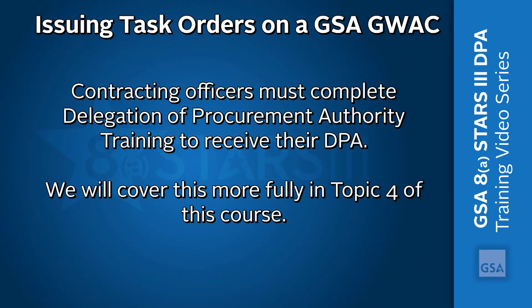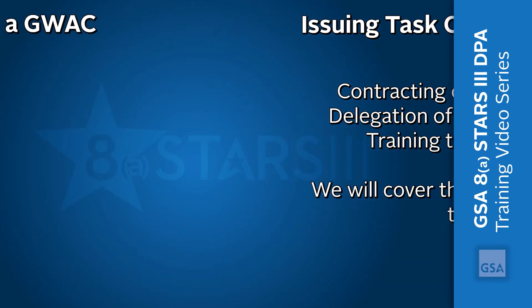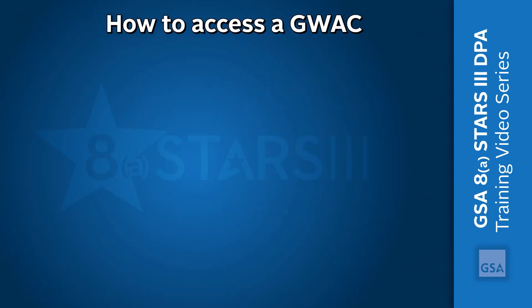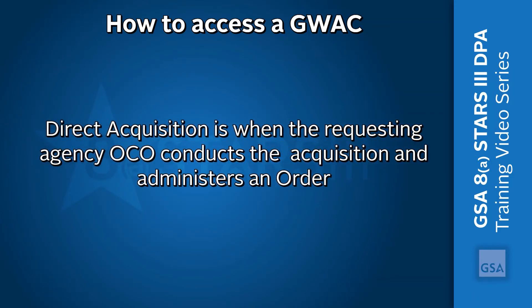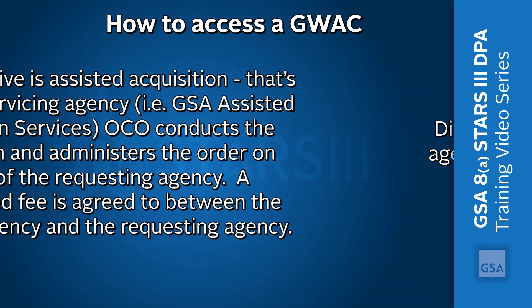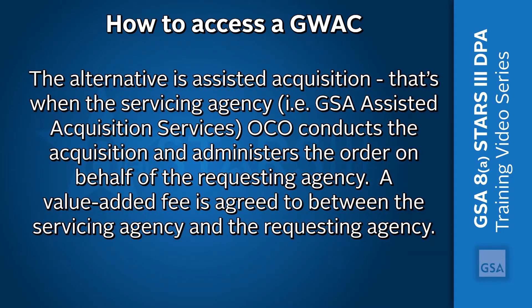There are two ways to access a GWAC. Direct acquisition is when the requesting agency OCO conducts the acquisition and administers the order. The alternative is assisted acquisition, where GSA's Office of Assisted Acquisition Services conducts the acquisition on behalf of the requesting agency. A value-added fee is agreed to between the servicing agency, GSA Assisted Acquisition Services at www.gsa.gov/aas, and the requesting agency.